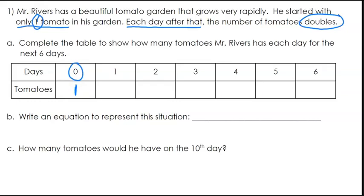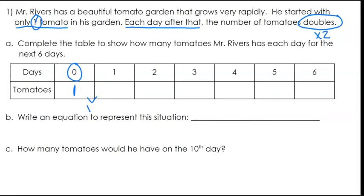And then each day after that, the number of tomatoes doubles. So doubles indicates that we are going to multiply by two. So each time to get the next value, we are going to multiply by two. So one times two is two. Two times two is four. Four times two is eight. And as we continue that pattern, we can fill out the table.